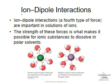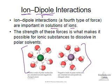Ion-dipole interactions occur when an ion in solution interacts with a polar molecule. The most common example is a salt dissolving in water. The strength of these forces is what allows ions to break apart and form interactions with the polar solvent — it's why most salts will dissociate in water. If you have a negative chloride ion, the positive (hydrogen) side of water orients toward it. For a positive sodium ion, the negative (oxygen) side of water orients toward it. A negative and a negative cannot interact — it must always be opposite charges.